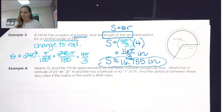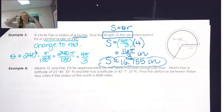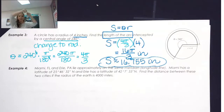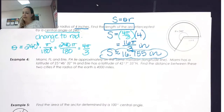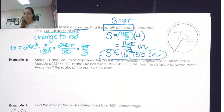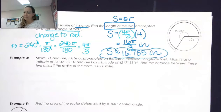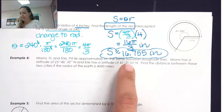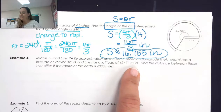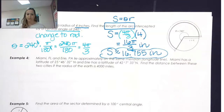Example 4 involves looking at points on the Earth apart from each other. Because the Earth is circular, the distance between two cities is really an arc length. Miami, Florida and Erie, Pennsylvania lie approximately on the same meridian. Miami has a latitude of 25 degrees, 46 minutes, 32 seconds north, and Erie has a latitude of 42 degrees, 7 minutes, 33 seconds north. Find the distance between these two cities if the radius of the Earth is 4,000 miles.